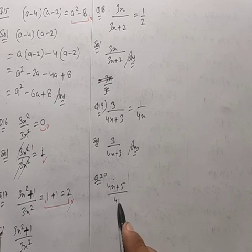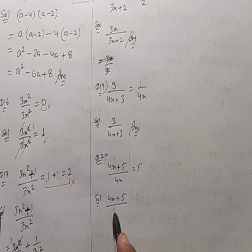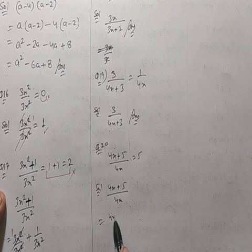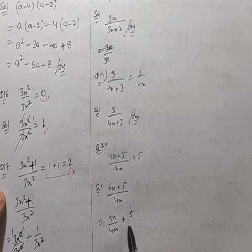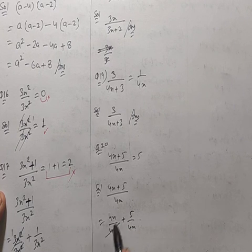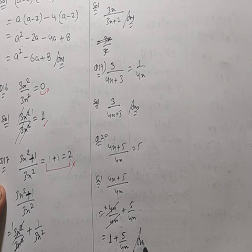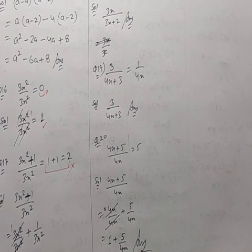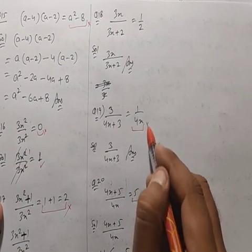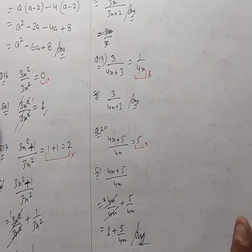Question 20: (4x+5)/4x = 5 is given. Solution: since the numerator has a plus, split into (4x/4x)+(5/4x) = 1+5/(4x). The correct answer is 1+5/(4x), not 5.